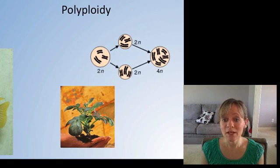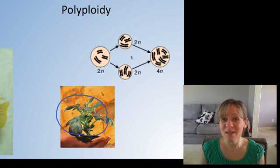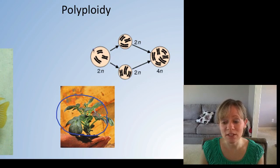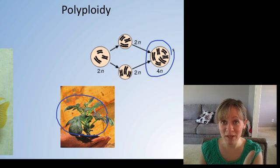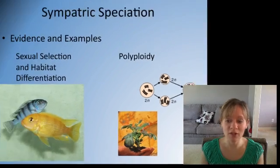The second way sympatric speciation can happen is through polyploidy, which only occurs in plants. During meiosis, a random duplication event occurs. If the parent was 2n, the offspring becomes 4n. Within one generation, because 4n and 2n are not compatible, the offspring can no longer mate with the parent, and so that offspring is an entirely new species.